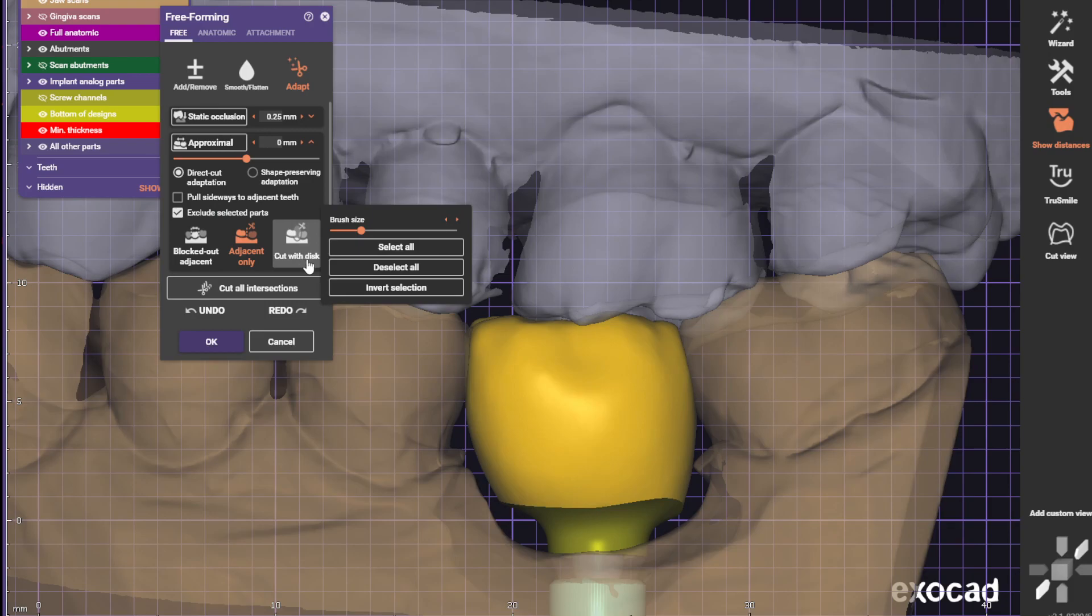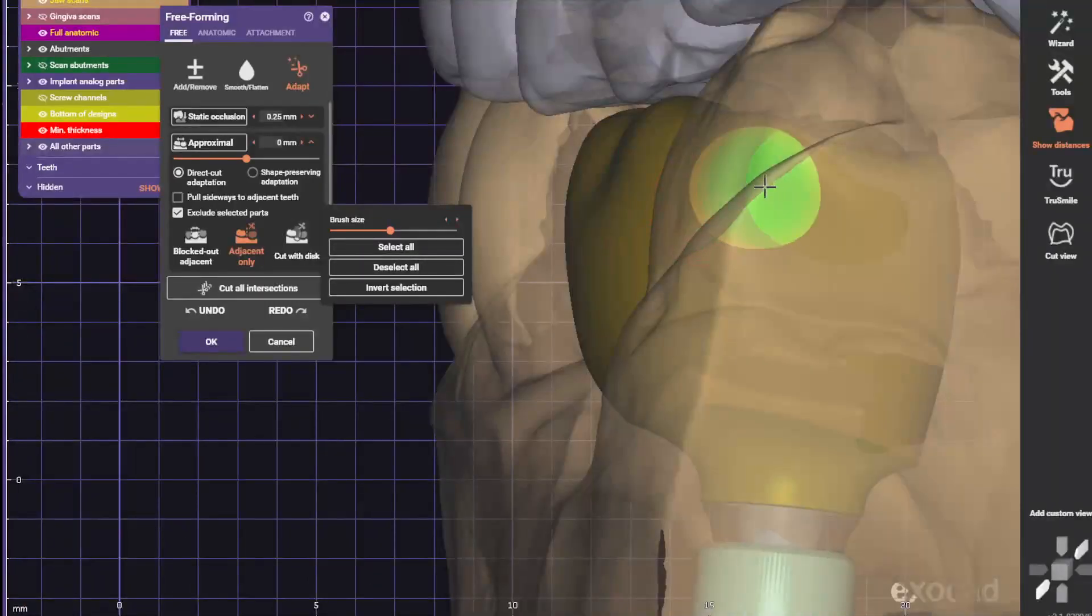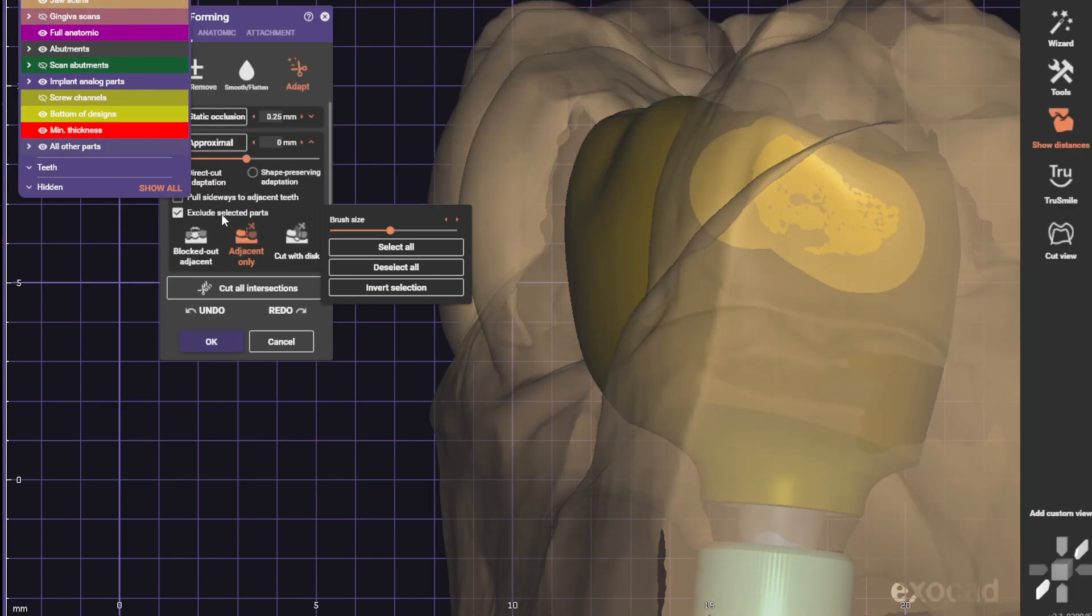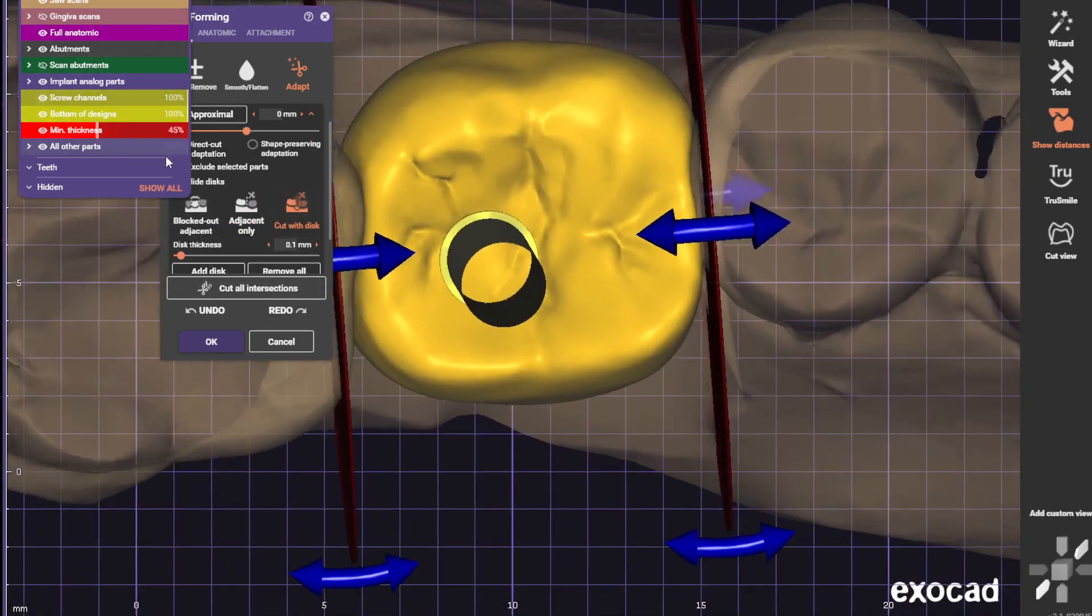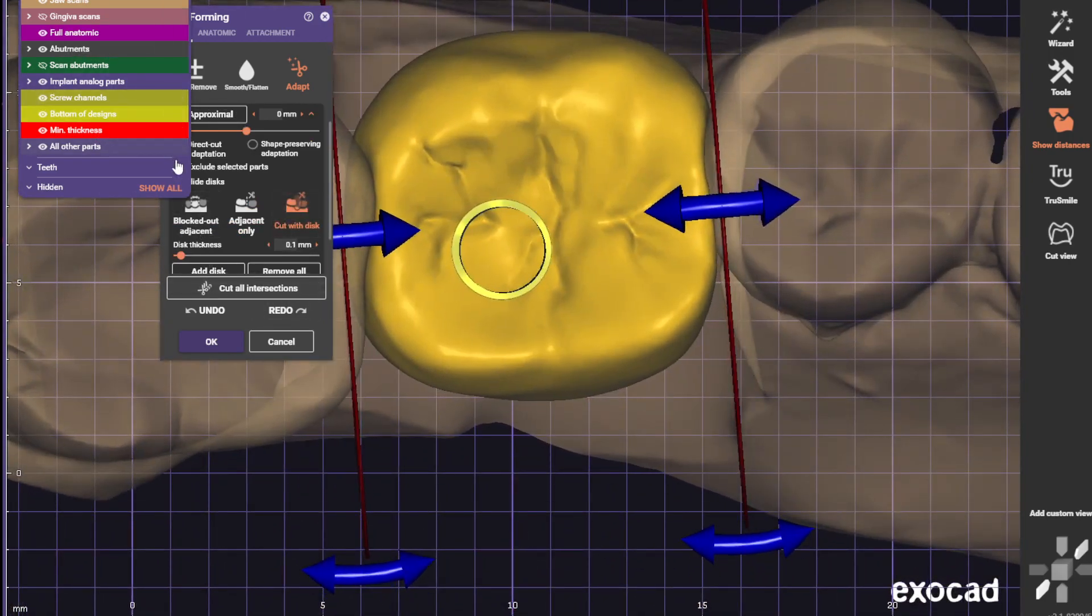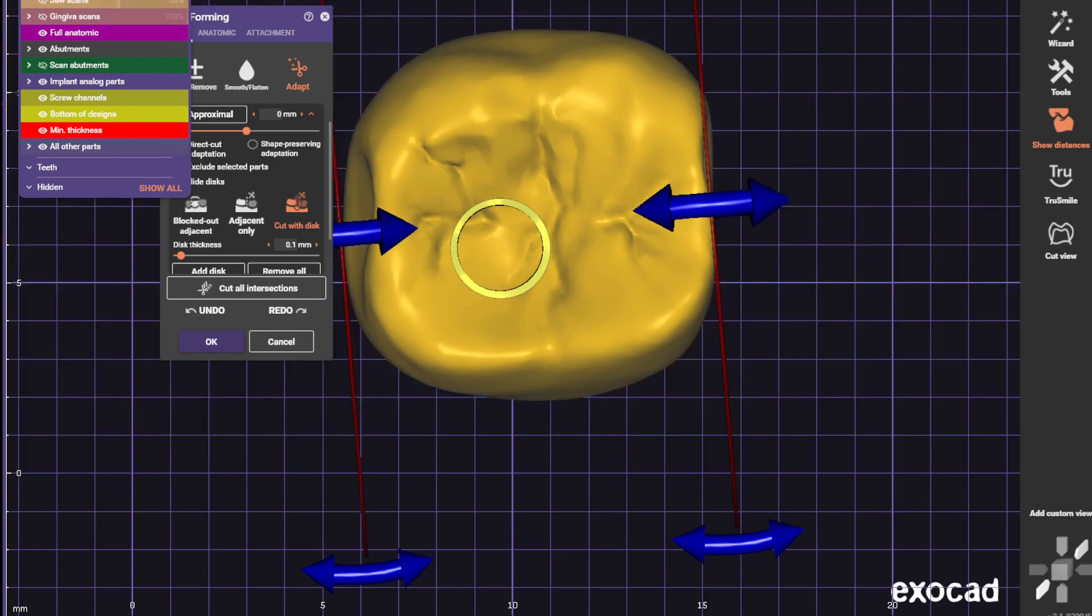Contacts. Cut only selected areas. Cut disk. You can see it does the same insertion direction as the screw hole, which is great. Now we can come over here.